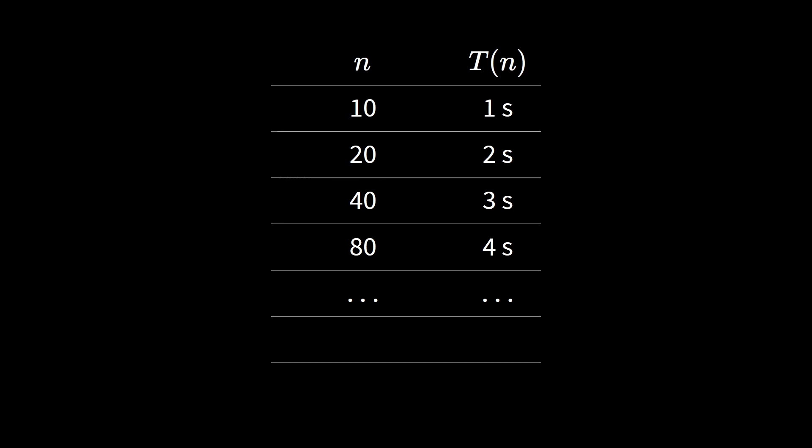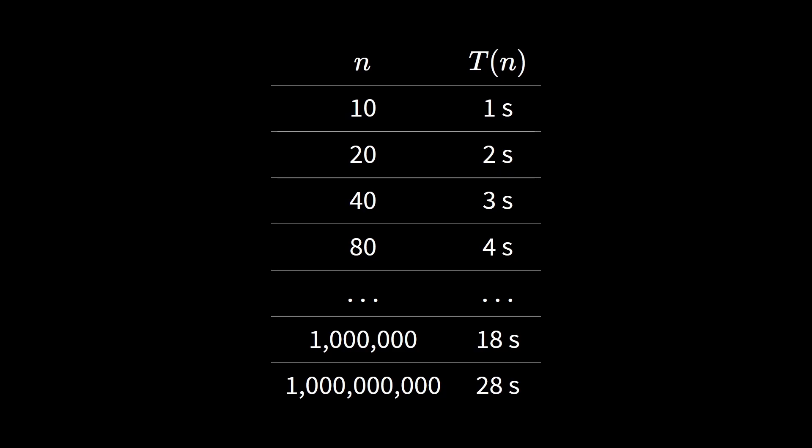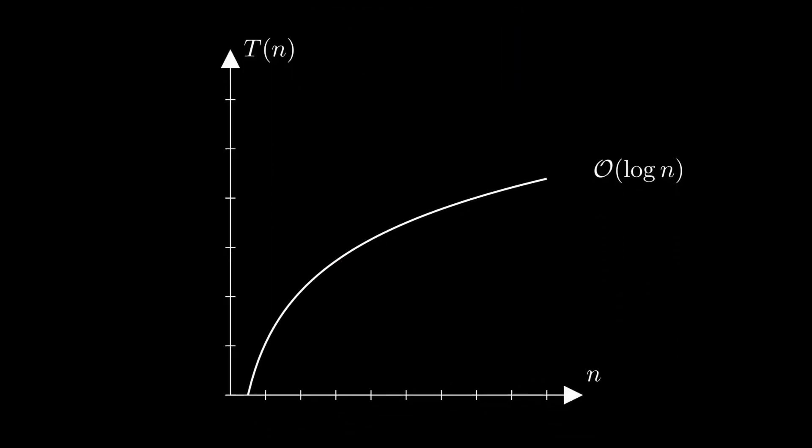The running time therefore increases only very slowly. For an input size of 1 million, the algorithm would need only 18 seconds, and for 1 billion, just 28 seconds. Therefore, an algorithm with logarithmic running time scales extremely well — much better than, for example, one with linear running time. An example of such an algorithm is known as binary search, which we will look at in the next video.